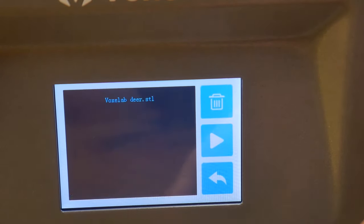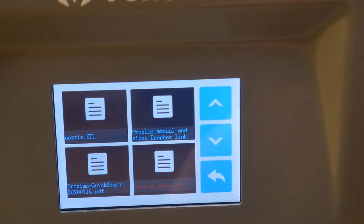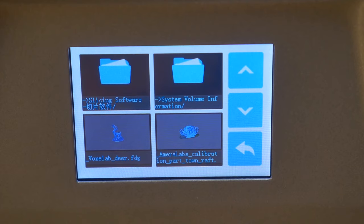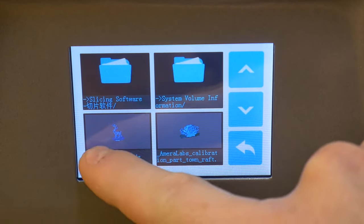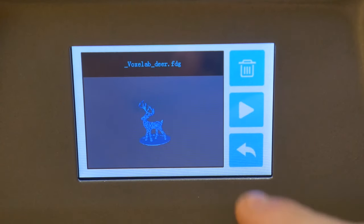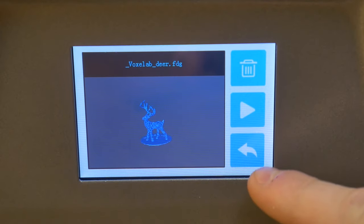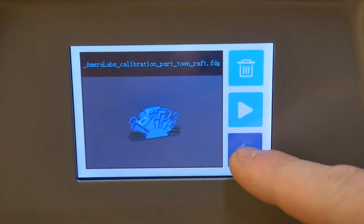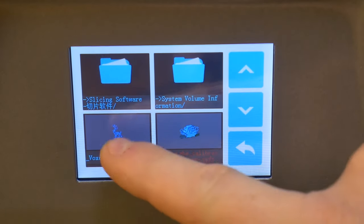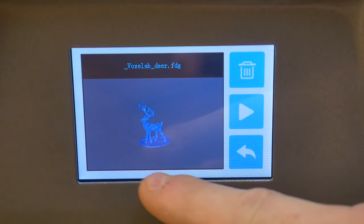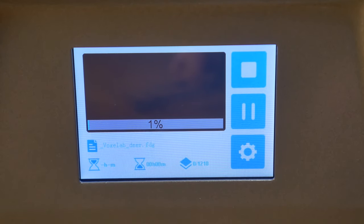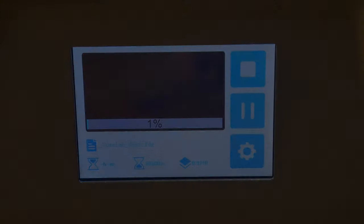I ended up having to slice those files myself before I was able to print them. I do like how when you do load a sliced file with the USB drive onto the Voxelab Proxima, it does show a small thumbnail of each of the files that are available to print. So once I loaded the file and pressed the play button, the printer took over and it printed the test file.